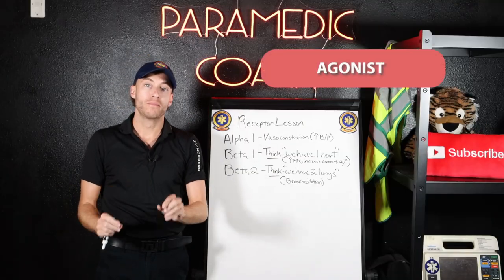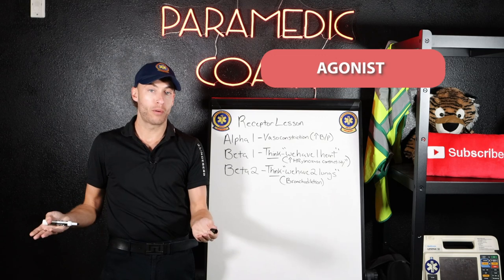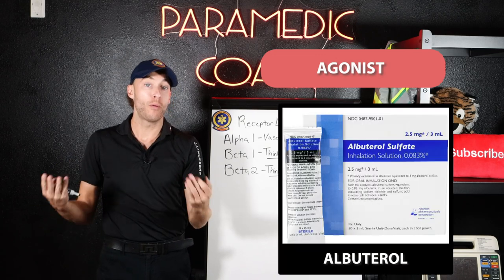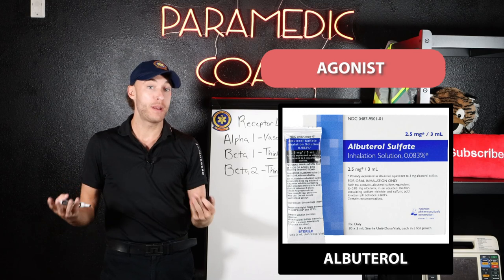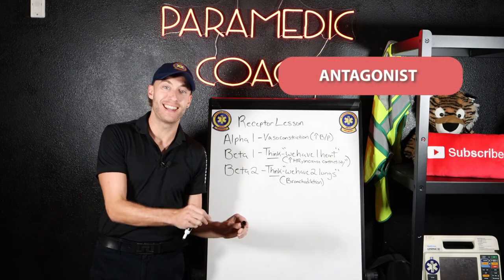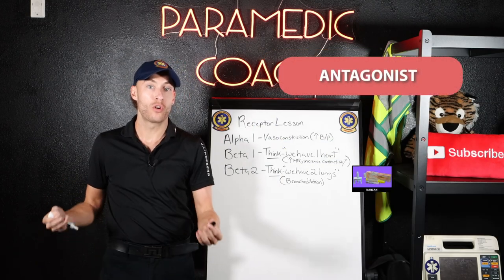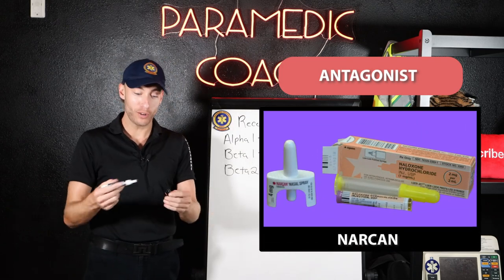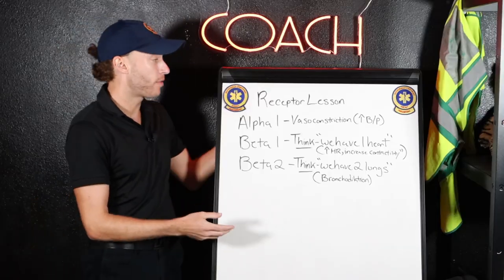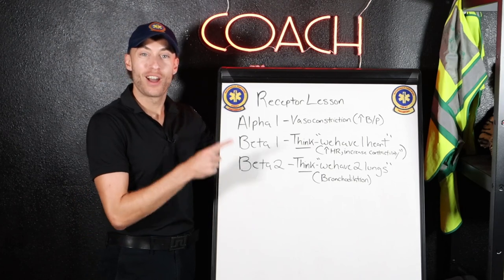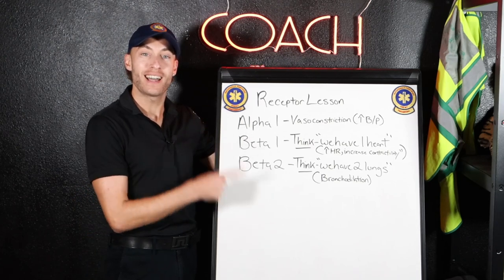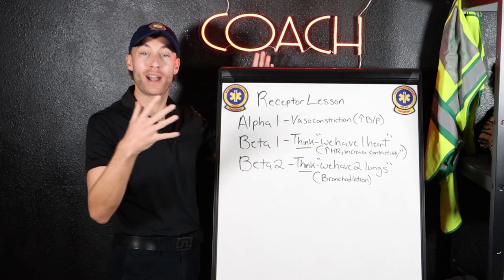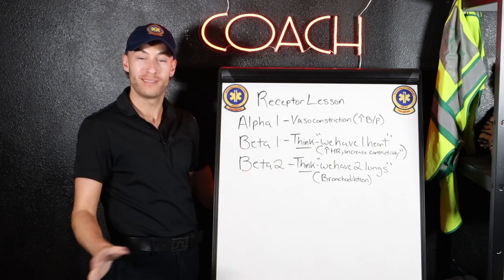To give you an example: an agonist would be albuterol, would be epinephrine. An antagonist would be naloxone — Narcan. Now these are EMT drugs. Here we have these receptors, and this is the effect they have when they are turned on by a drug.